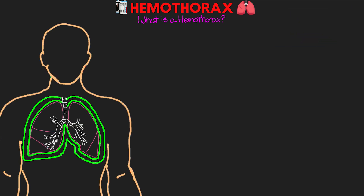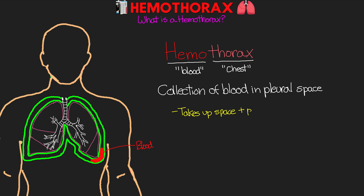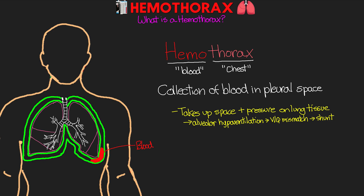Let's start off talking about what is a hemothorax. If we break the word down, we have hemo meaning blood and thorax meaning chest. So essentially this is going to be a collection of blood in the chest, or more specifically the pleural space. Having blood in this pleural space does a couple of different things — it takes up space and puts pressure on the lung tissue keeping them from fully expanding. This is going to cause alveolar hypoventilation, lead to a VQ mismatch, a ventilation-perfusion mismatch, and essentially anatomical shunting where we're perfusing areas of the lung without any good gas exchange taking place.